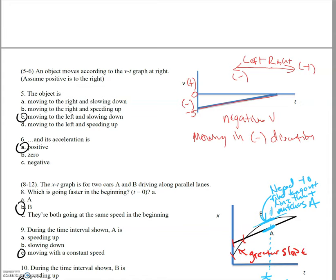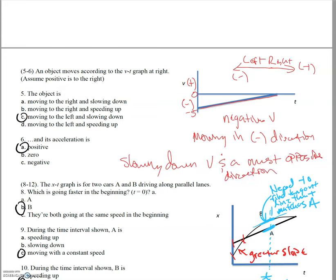For question six about acceleration direction: if we're slowing down, that means v and a must be in opposite directions. So if our velocity is negative, that means our acceleration must be positive — directed to the right. That's answer A.